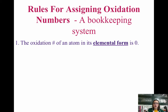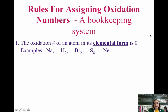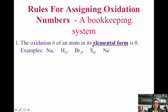Here are the rules we follow when assigning oxidation numbers. The first rule is that the oxidation number of an atom in its elemental form is zero. Some examples: sodium, H₂ gas, Br₂ liquid, S₈ — which is sulfur's most stable form — and neon. Anything in its most stable elemental form has an oxidation number of zero.